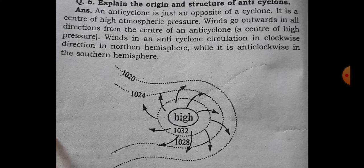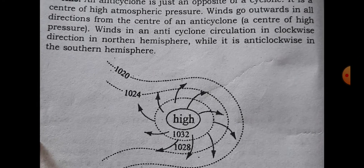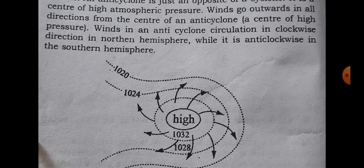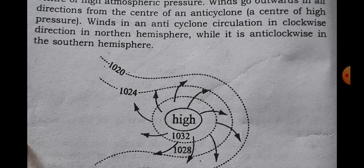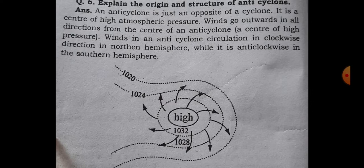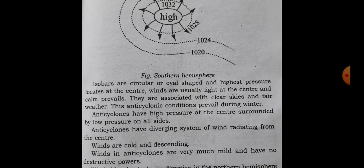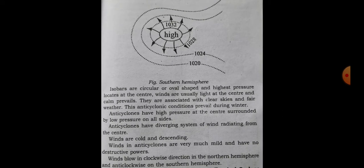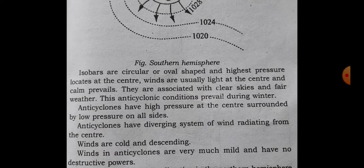An anti-cyclone is just the opposite of a cyclone. It is the center of high atmospheric pressure. Winds go outward in all directions from the center of an anti-cyclone, a center of high pressure. The winds in an anti-cyclone circulate in a clockwise direction in the northern hemisphere while it is anti-clockwise in the southern hemisphere. High pressure at the center — the diagram is given here. It is just opposite of cyclone.